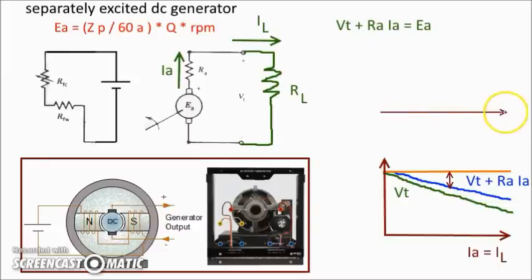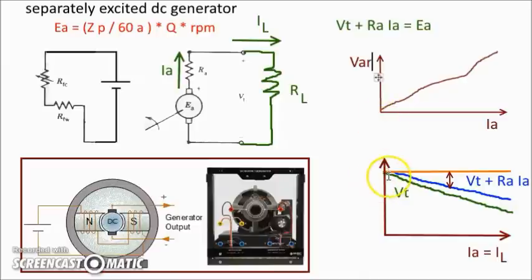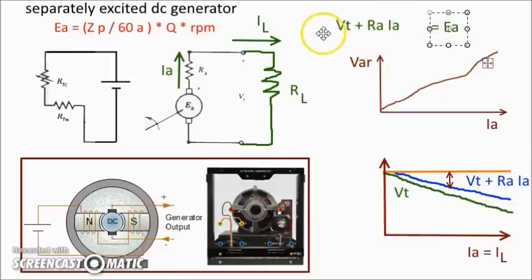If we draw armature reaction versus current — armature reaction voltage on the y-axis and Ia on the x-axis — we see that when there is no current (open circuit), the armature reaction is almost zero, meaning Vt + Ra × Ia matches Ea. But when we increase load current, we have more armature reaction. We also need a correction in our formula, since Vt + Ra × Ia is not equal to Ea. So we add another term: the armature reaction voltage.